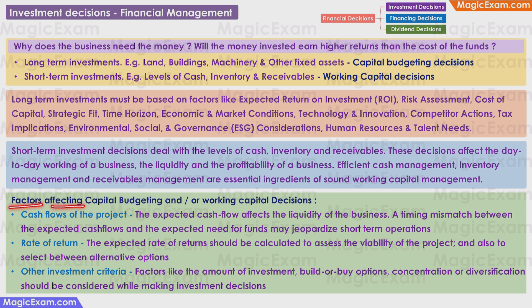What are some of the factors affecting both capital budgeting and working capital decisions? The first is cash flows of the project. The expected cash flow affects the liquidity of the business, and a timing mismatch between the expected cash flows and the expected need for funds may jeopardize short-term operations. For example, if you take a loan from a bank that is repayable in one year, but your business will start generating cash only after two years, then there is a mismatch. So your investment decision should be based on whether you will be able to balance between the expected cash flow and the expected need for cash.